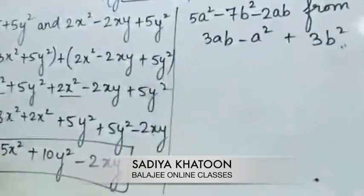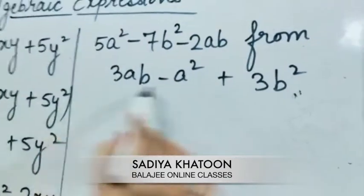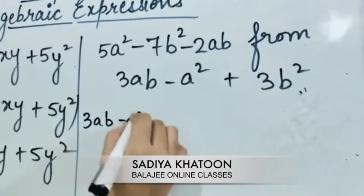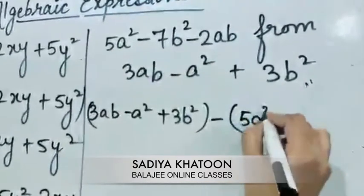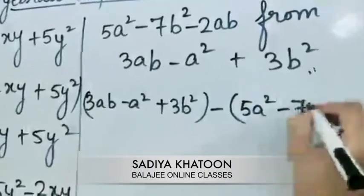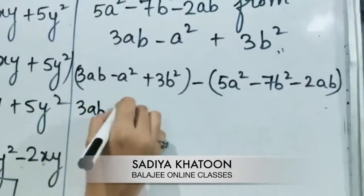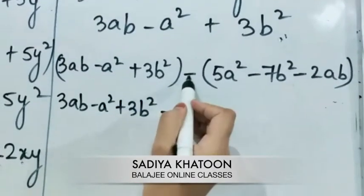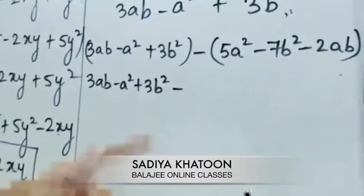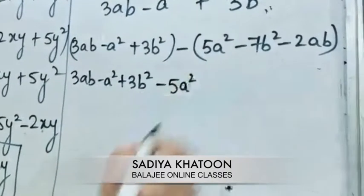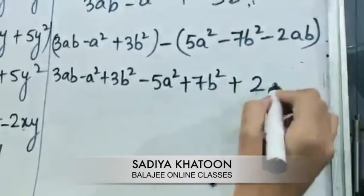This is a subtraction question. We have to subtract 5a squared minus 7b squared minus 2ab from the second expression. Take care of the word 'from' — the expression that comes after 'from' is written first, then you write the subtraction sign and the first expression in brackets. When we open the bracket in subtraction, all the signs inside change and reverse. If a term is plus, it becomes minus; if it is minus, it becomes plus. So minus 7b squared becomes plus 7b squared, and minus 2ab becomes plus 2ab.